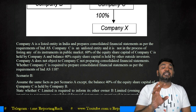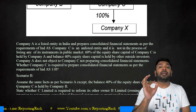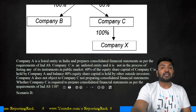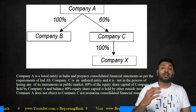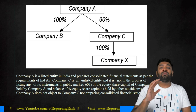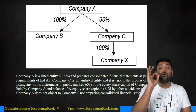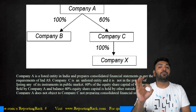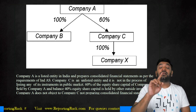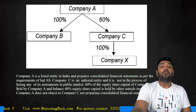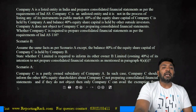Company C is eligible to claim the exemption provided all its shareholders have agreed. Company A is only holding 60% of Company C, so there is 40% held by someone else as well. Those minority shareholders should also approve that Company C is not required to prepare financial statements on a consolidated basis. Only then is Company C eligible to claim exemption. But Company C is eligible to claim exemption if the balance 40% also agrees that Company C does not prepare financial statements on a consolidated basis.